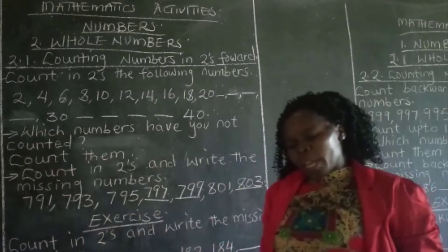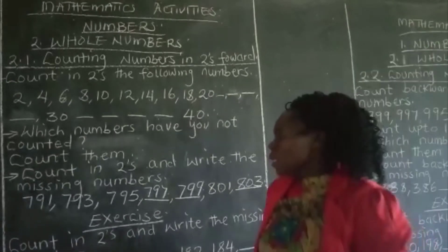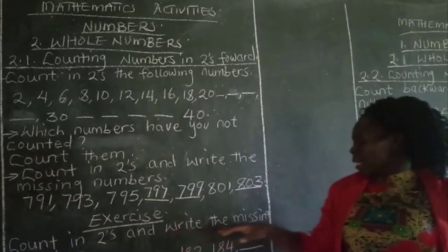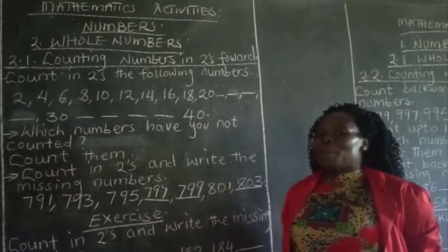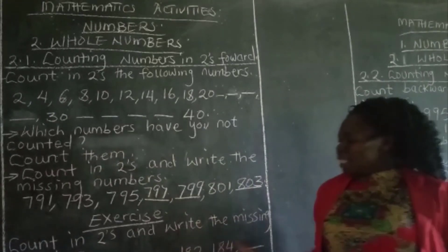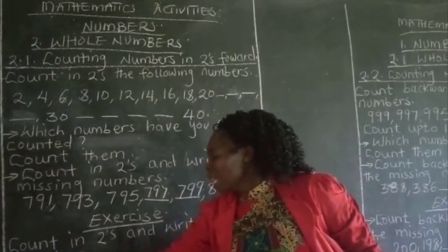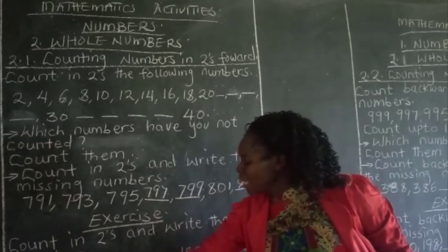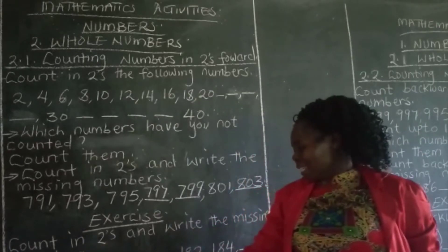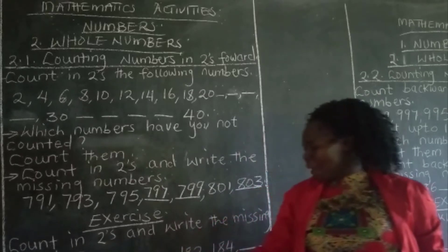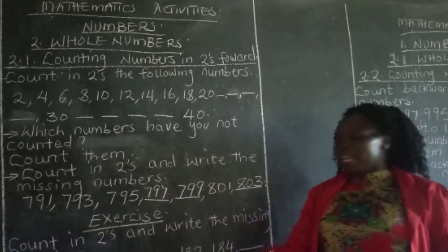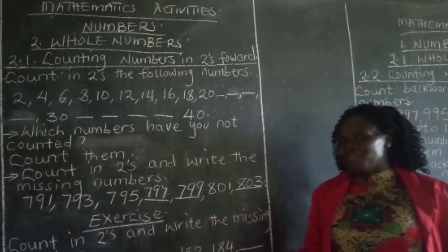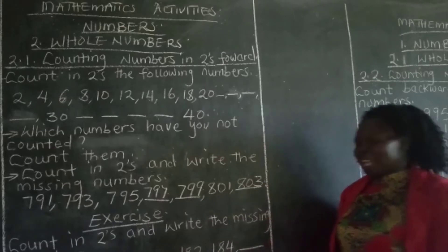So learners, when you go home, I would like you to go and count numbers in twos and write the missing numbers from the numbers that you've been given. These are the numbers. We have 174. Then we don't have the next number, and the next number, and the next number. So there are three missing numbers before we go to the next, which is 182. Then 184. And we also have one missing number.